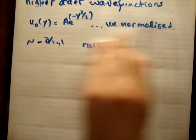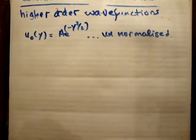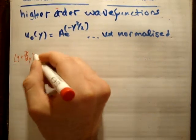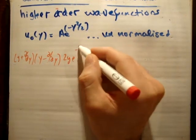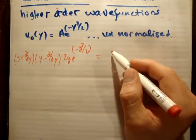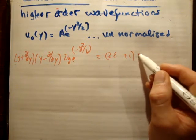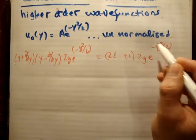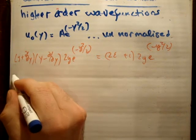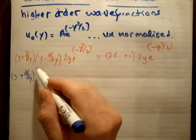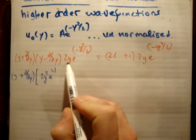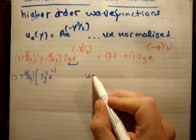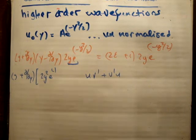So we have (y + d/dy)(y - d/dy) acting on 2y e^(-y²/2), and that's going to equal (2ε + 1) times 2y e^(-y²/2). Applying (y - d/dy) first: we get 2y² e^(-y²/2) minus d/dy of 2y e^(-y²/2). That derivative requires the product rule — u·v' + v·u' — so let's go ahead and apply that.